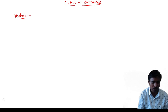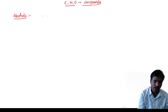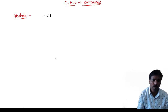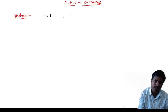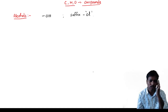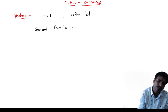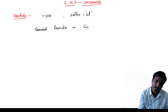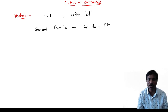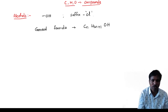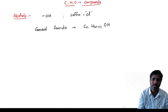What is the functional group of alcohols? It is OH. The functional group is OH. And what is the suffix we have? The suffix is -ol. Coming to the general formula of alcohol — very important — the general formula is CₙH₂ₙ₊₁OH.